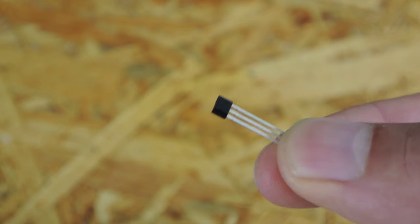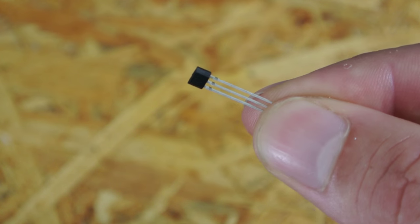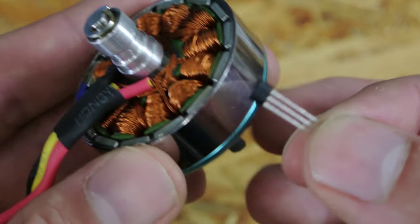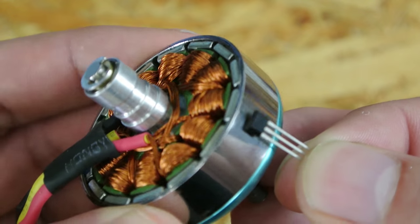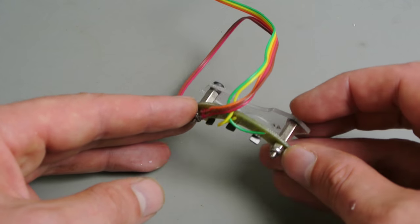To have a feedback loop for the motor I used some switching hall sensors. They detect change in magnetism, so if you hold them close to the magnets of the motor they start to switch on and off when you rotate it.